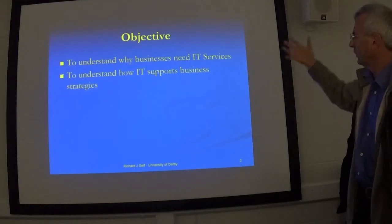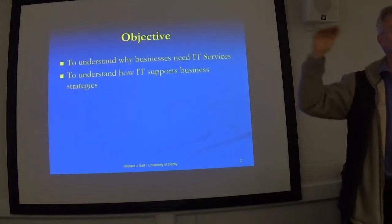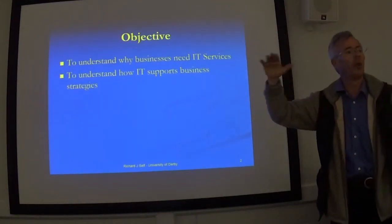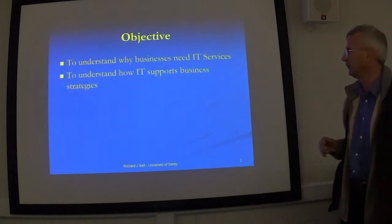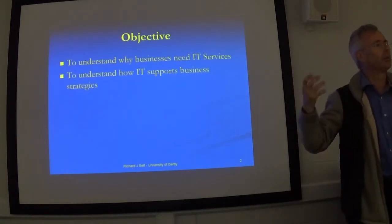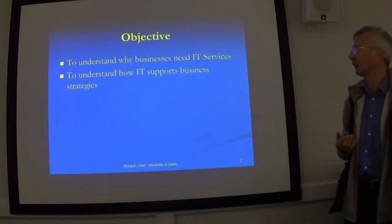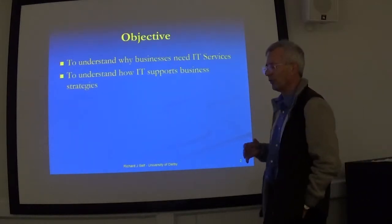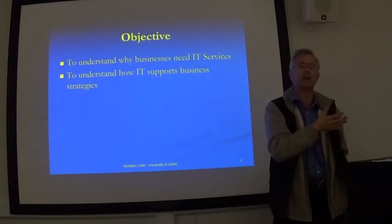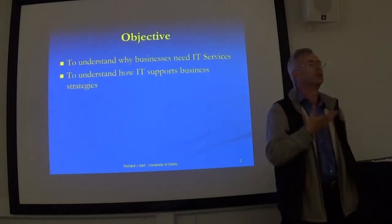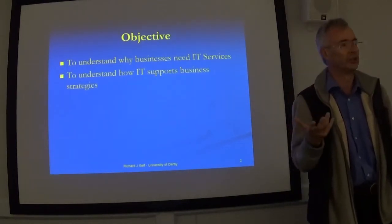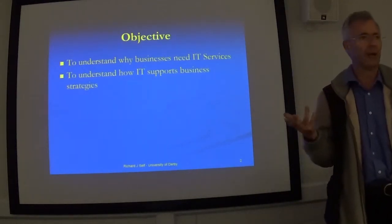We're trying to look at why businesses need IT — to achieve that tier one or level one in the Zachman architecture. How can that help us identify the right use of IT? And from the IT side, what can we do to help organizations do things better?